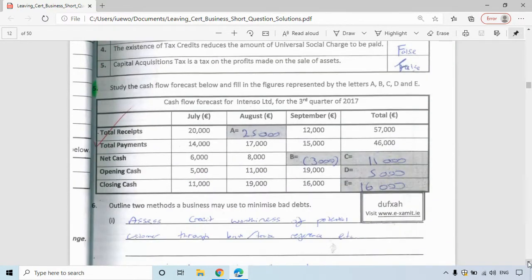Question five, then, cash flow forecast. So again, unit four. You have to remember the logic of receipts minus payments equals net cash. Net cash plus opening cash equals closing cash. And closing cash in the first month, or sorry, opening cash in the first month, which you can see there's 5,000, will always be the opening cash in the total column as well.